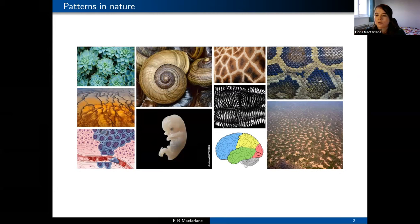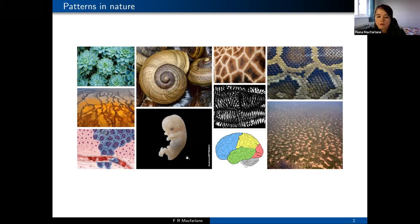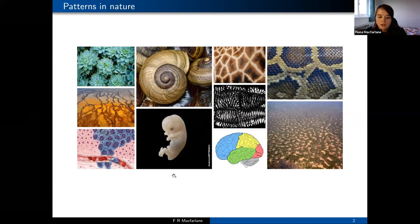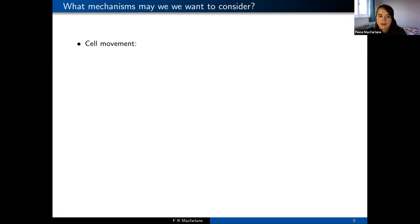For today's talk we're going to focus on patterns more at a cellular level — for example cell sheets, or where we see cells pattern from a single cell into a complex organism as in developmental biology. We might also observe patterns in things like cancer, where we have a growing cell population invading a tissue. So we want to think about what kind of mechanisms from a biological standpoint we might want to include in our mathematical model.